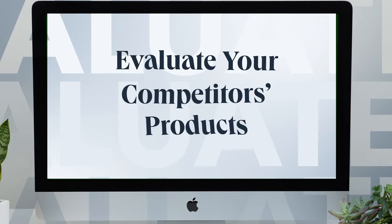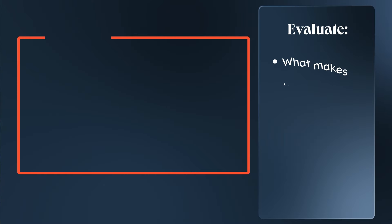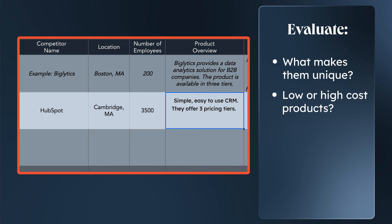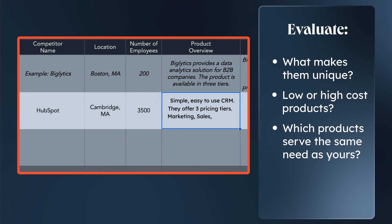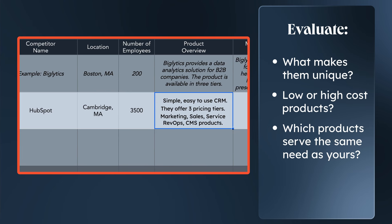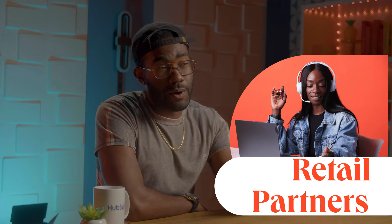Step two: evaluate the products your competitors are offering. What makes your competitor unique? Do they offer low or high-cost products? Which of their products serve the same need for the customer as yours? While evaluating your competitors' product offerings, you'll also want to look at how they distribute their products — are they direct-to-customer or do they rely on retail partners? Use the product data you find to estimate how much market share your competitors have.